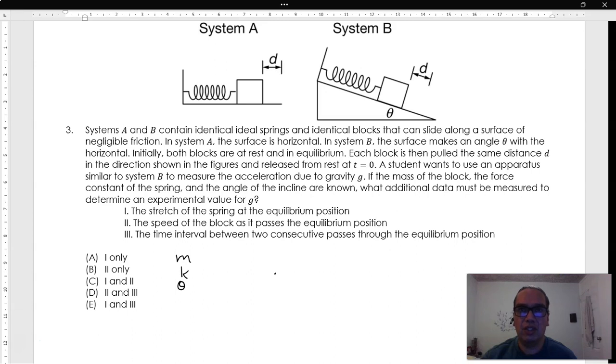The options are: The stretch of the spring at the equilibrium position. The speed of the block as it passes the equilibrium position. The time interval between two consecutive passes through the equilibrium position.